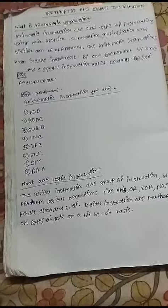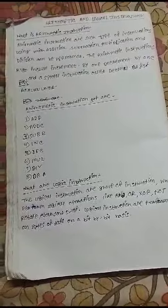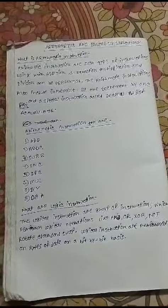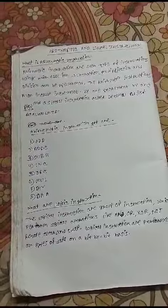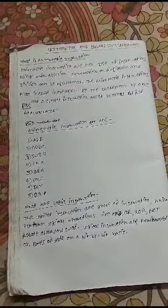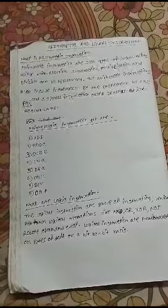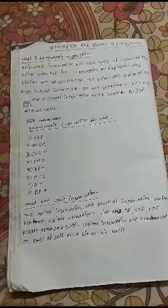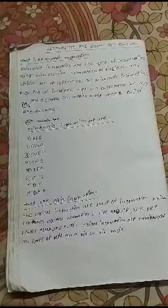Today's topic is Arithmetic and Logic Instructions. Arithmetic instructions are instructions using which addition, subtraction, multiplication, and division can be performed. Arithmetic instructions also include increment by one, decrement by one, and a special instruction called Decimal Adjusted Accumulator.